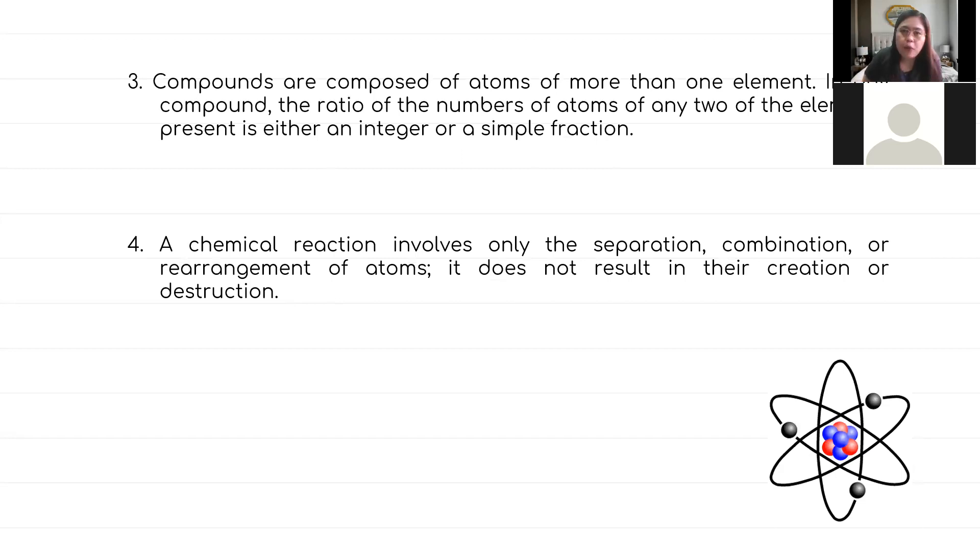Number three, compounds are composed of atoms of more than one element. These elements that have atoms can combine with each other, and the resulting product is called a compound. In any compound, the ratio of the number of atoms of any two elements present is either an integer or a simple fraction.